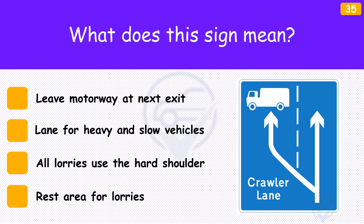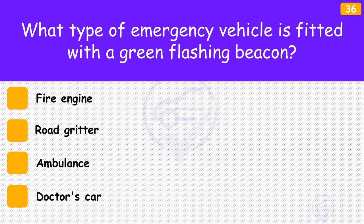What does this sign mean? The answer is 'Lane for heavy and slow vehicles'. Where there's a long, steep, uphill gradient on a motorway, a crawler lane may be provided. This helps the traffic flow by diverting the slower heavy vehicles into a dedicated lane on the left.